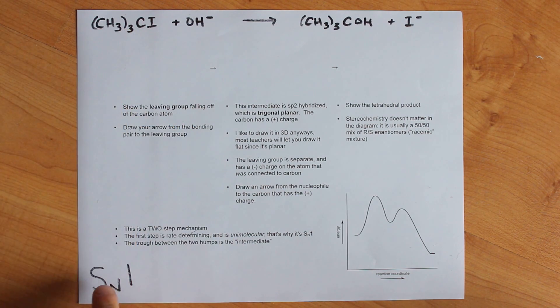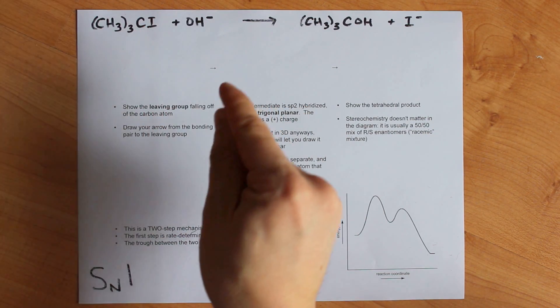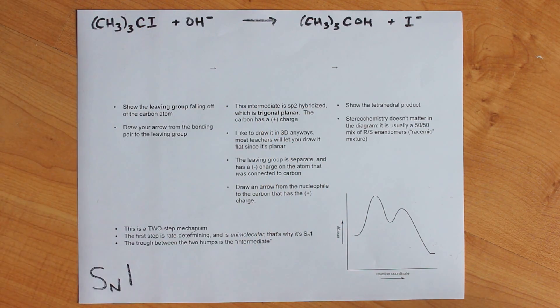For a SN1 reaction, the very first step of the reaction is going to be the leaving group leaving, and it will leave a carbocation behind.